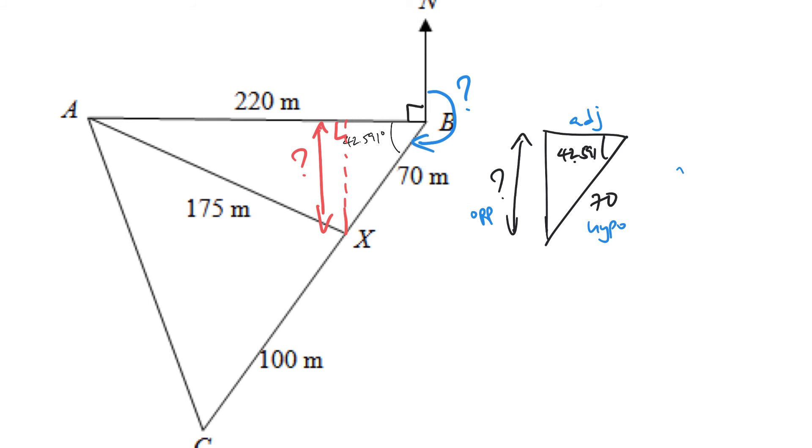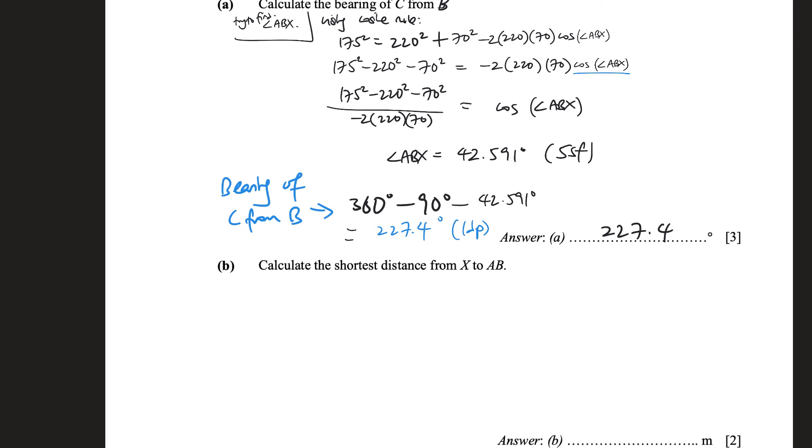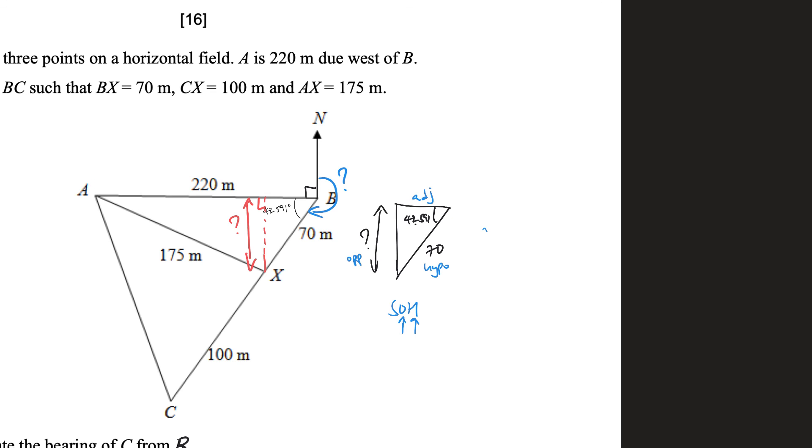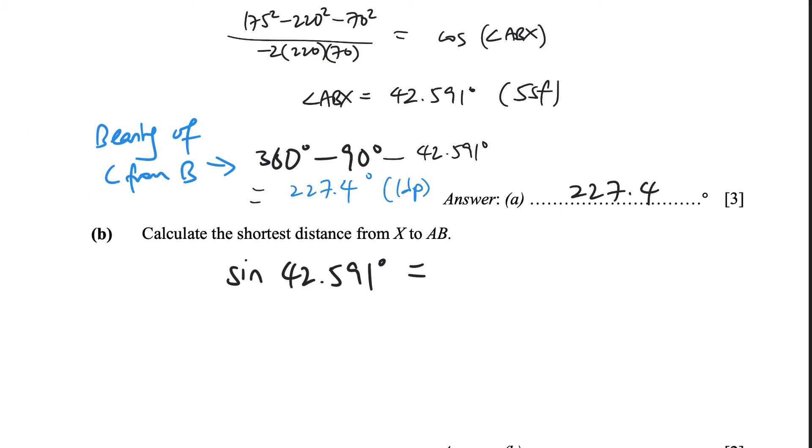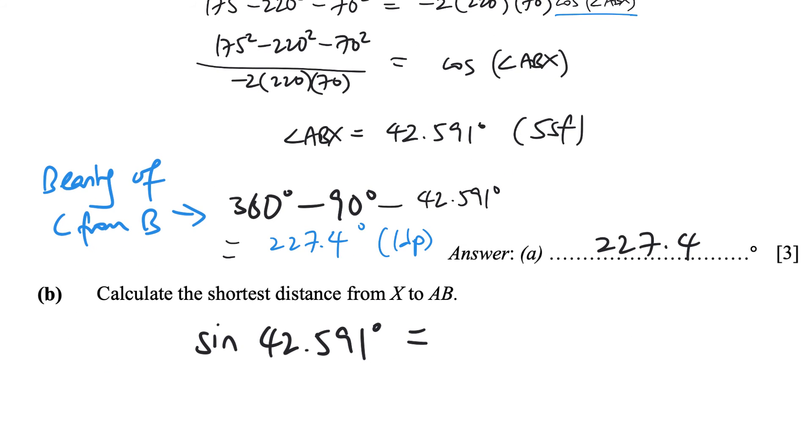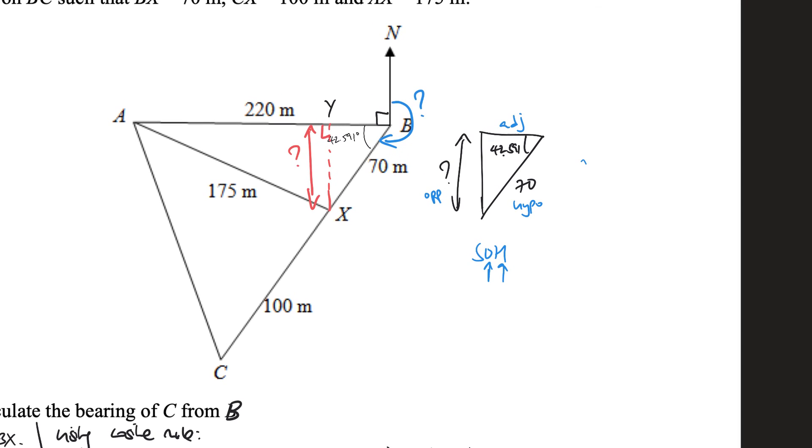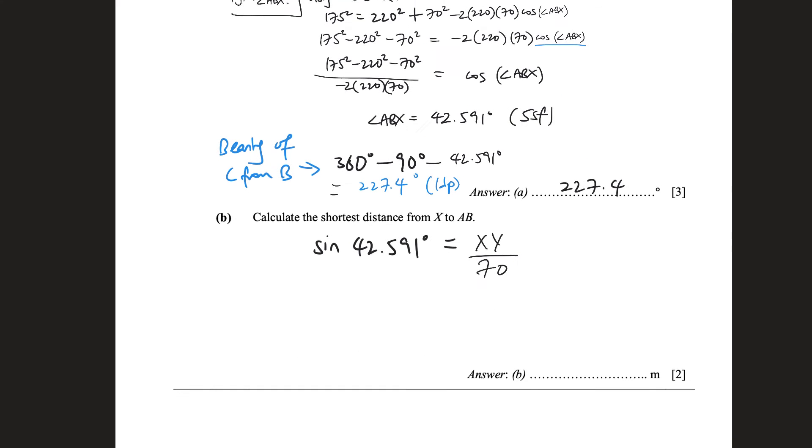Sine. So sine is opposite over hypotenuse. So if I use sine, I involve opposite and hypotenuse. So sine is the correct one to use. So I can say that sine of 42.591 degrees is simply my opposite side, which is, I don't know what it is, so let's just call it, anything you want really, let's call it Y. So it's going to be Y, opposite, over hypotenuse, which is 70. So Y, this is Y, this is X. So Y, opposite, over hypotenuse, 70. So we want to find the shortest distance now. So Y, which is the shortest distance, is simply 70 times sine of 42.591. You multiply 70 on both sides.